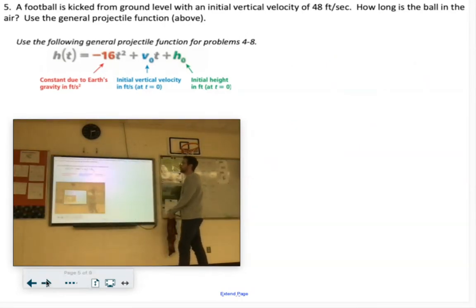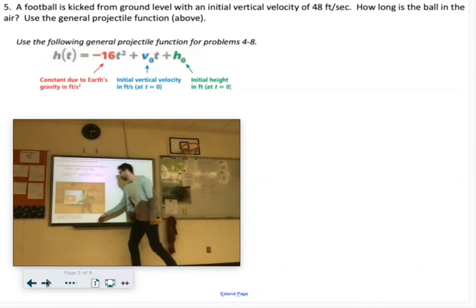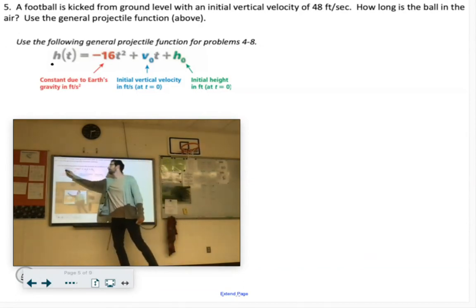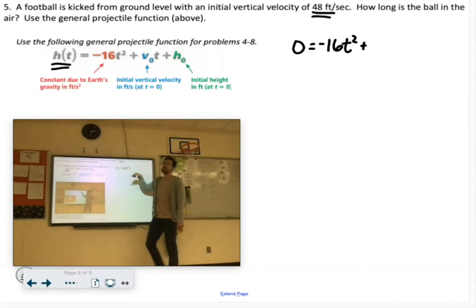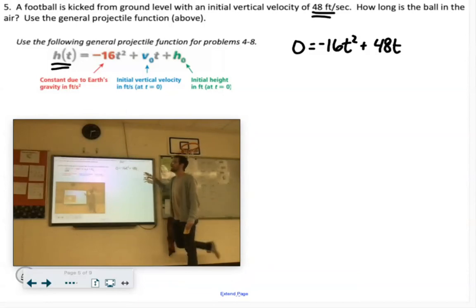A football is kicked. Didn't we just do this? Oh no, now it's a football. A football is kicked from ground level with an initial vertical velocity of 48 feet per second. How long is the ball in the air? So again, we're looking for when it hits the ground again. So when h of t equals zero, zero equals negative 16t squared plus the velocity on this one is 48 feet per second, so plus 48t plus the starting height is getting kicked off the ground, so it's going to be plus zero, which we could ignore the plus zero.